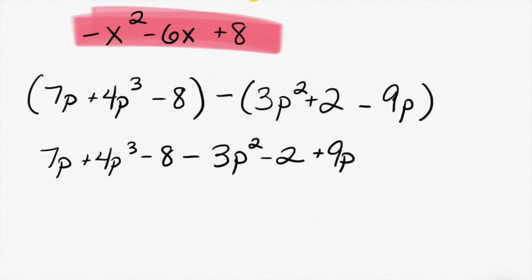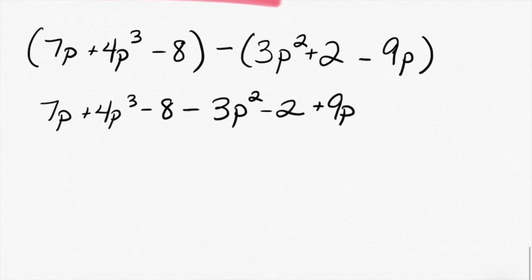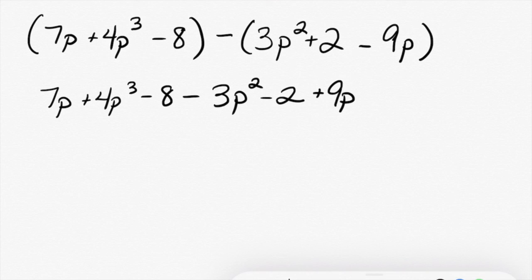Very good, because it's minus a negative, which is the same thing as plus. Okay, so now that we have this done, let's combine some stuff. Somebody that I haven't picked on... Dakota, can you tell me two things I can combine? Very good. I can combine the seven P and the nine P.